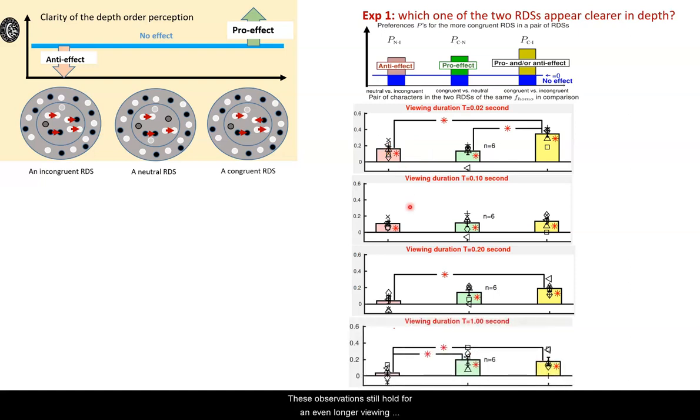These observations still hold for an even longer viewing duration of one second. So it seems like when the viewing duration is too short for feedback to be available, reversed depth signals from V1 contribute to perception by enhancing or degrading perception.